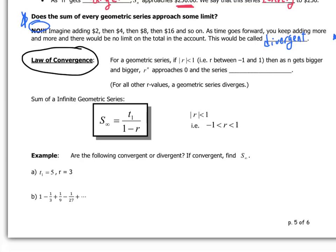There's a law of convergence, in fact. Let's read it carefully. For a geometric series, if the absolute value of r is less than 1, in other words, r is between minus 1 and 1, then as n gets bigger and bigger, r to the n approaches 0. So 1 minus r to the n approaches 1. And we say that the series converges. As long as r is between minus 1 and 1, the series will converge.